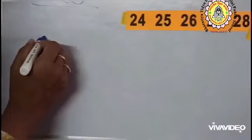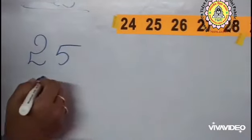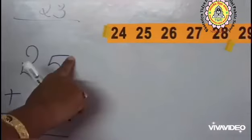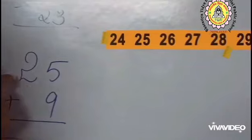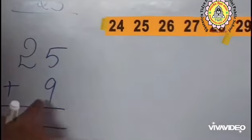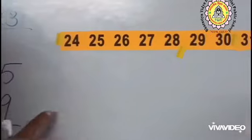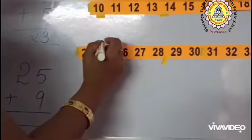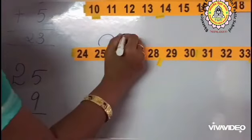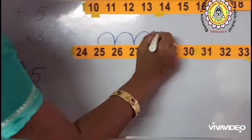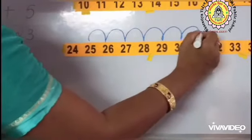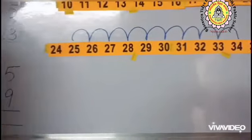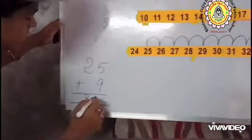Let us do one more sum children. 25 plus 9. Now, we have to add 9 to the given number 25. See, here is the number line and we have to go 9 steps forward from the number 25 — 1, 2, 3, 4, 5, 6, 7, 8, and 9. What is the answer children? 25 plus 9 is equal to 34.